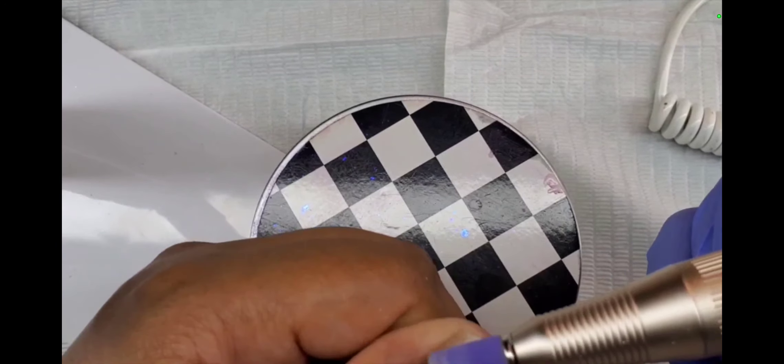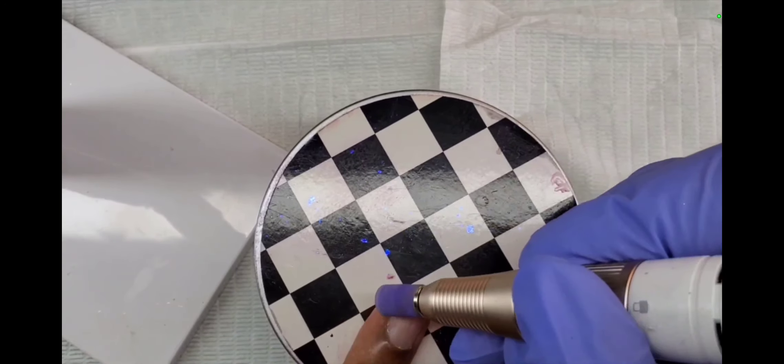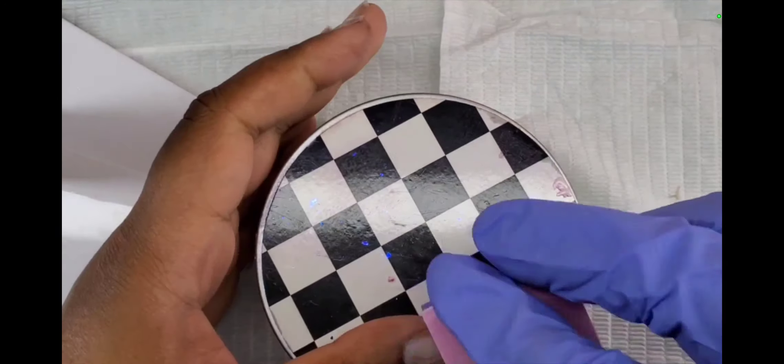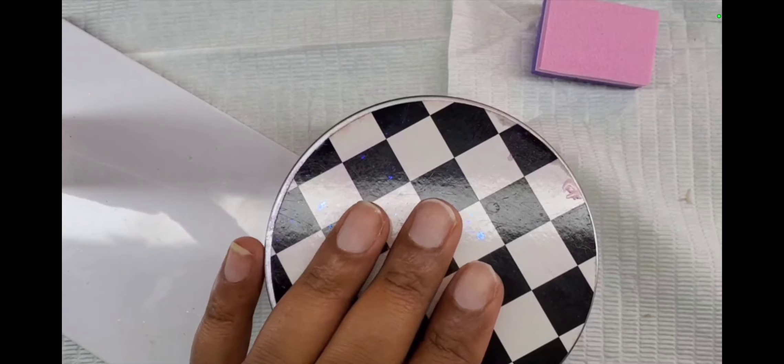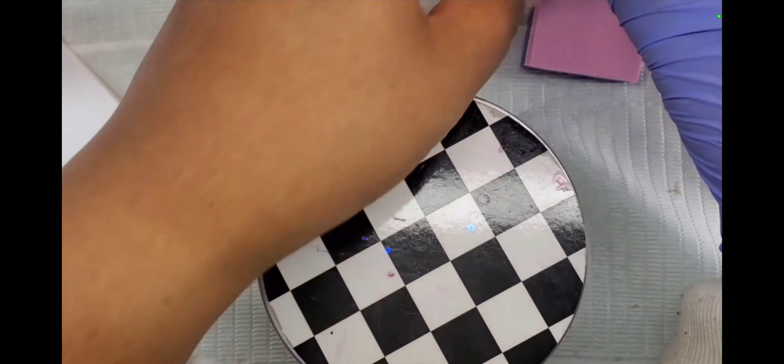And then I'm just gonna roughen up the nail surface, clean up whatever dried dead cuticle I missed. And then I buff the nail plate. Wipe off the excess, the dust and whatever. And then I'm gonna go in with an alcohol wipe and just clean the nail surface so if there's any more leftover debris it doesn't stay on there.